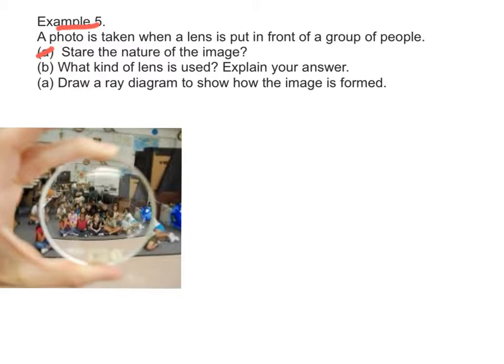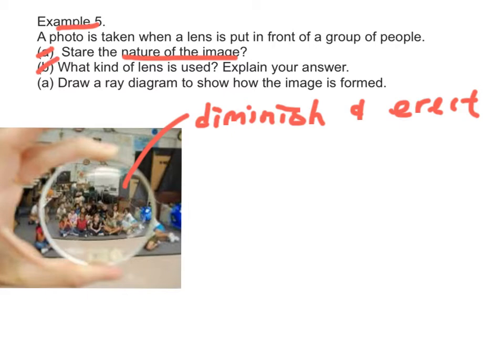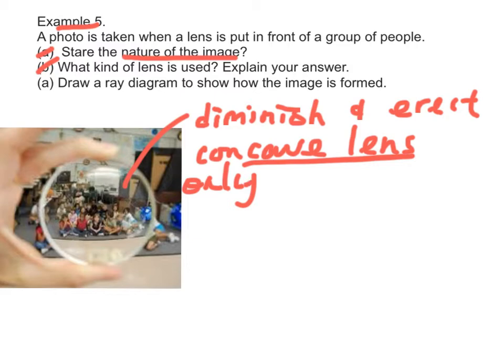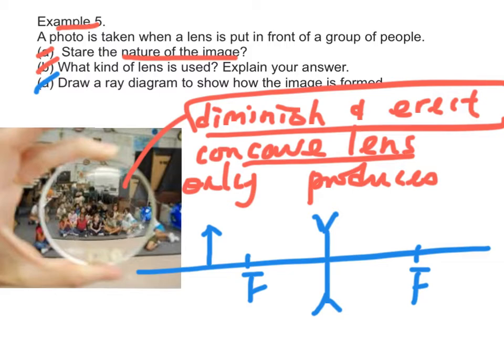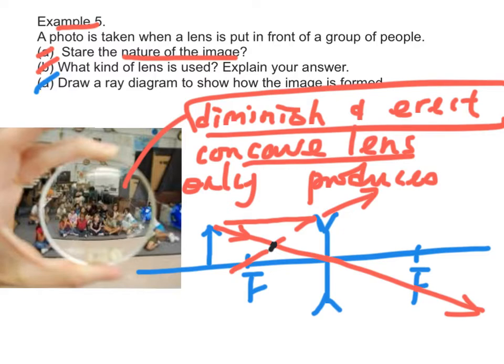Example 5, part A: The image nature is diminished and erect. Part B: This is a concave lens, because only a concave lens produces a diminished and erect image. Part C: The ray diagram shows that, by drawing special light rays, the image is formed in front of the lens, between the focus and the lens.